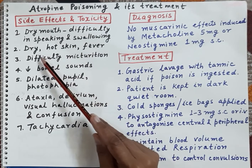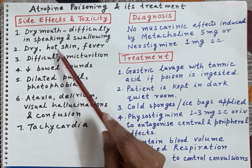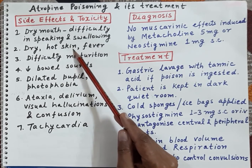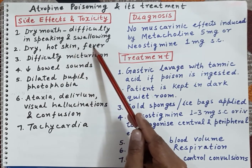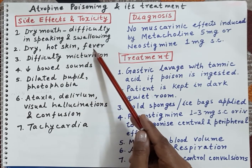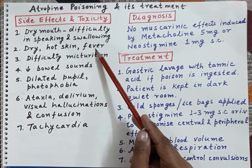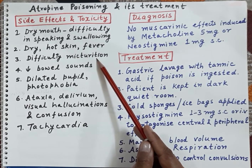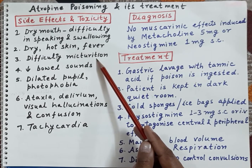Reduced sweat secretion results in dry hot skin, hyperthermia, and fever. Atropine also causes relaxation of smooth muscles of the urinary bladder, and therefore there is retention of urine and difficulty in micturition.